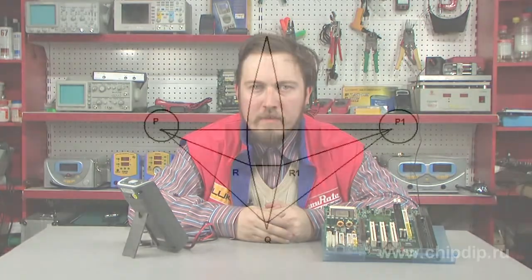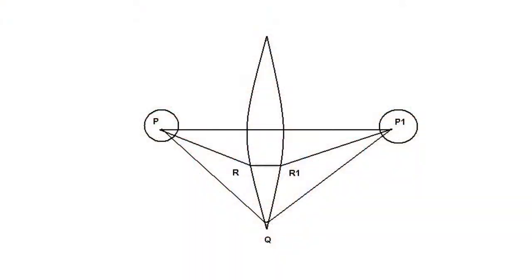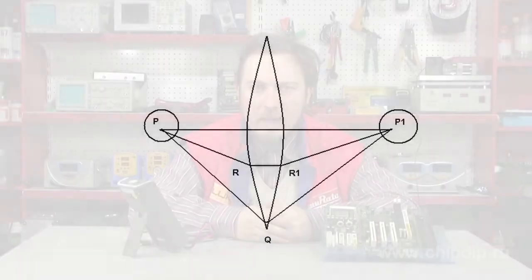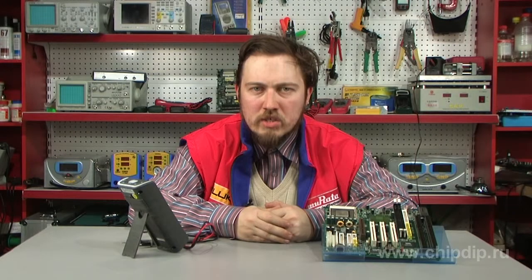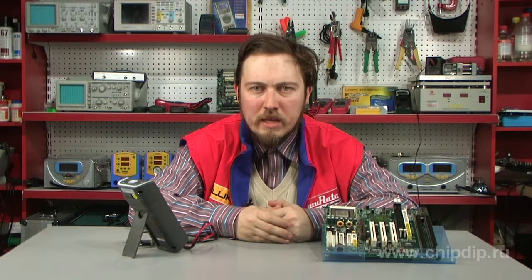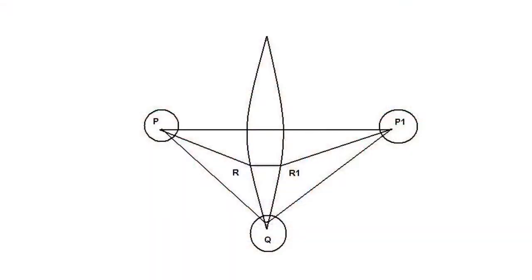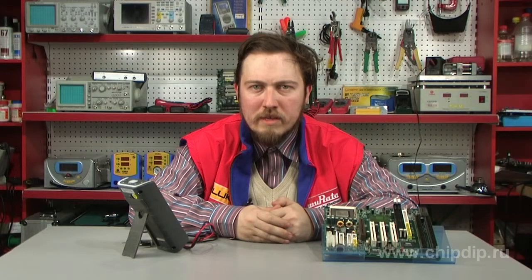Let us imagine the situation where all the light emitted at point P is connected to another point, P1. Obviously, it means that light may come from P to P1 along a straight line. But how can we arrange that the light passing from P to Q comes to P1 as well? We want to collect all the light at P1 again.